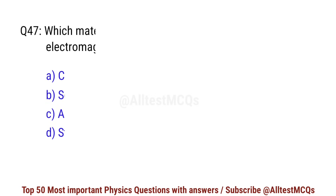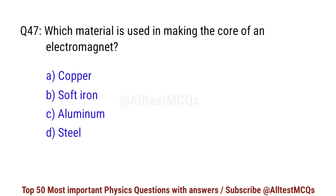Question number 47. Which material is used in making the core of an electromagnet? Right option is B. Soft iron.